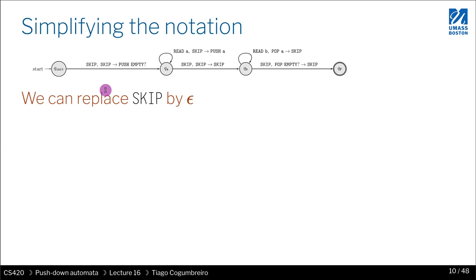So the first thing you can do is what we've already done in NFAs, which is replacing skip by epsilon. As we know, in an NFA, whenever we write epsilon, that means we're skipping the input, we're not reading it. So we replace skip by epsilon in each location.